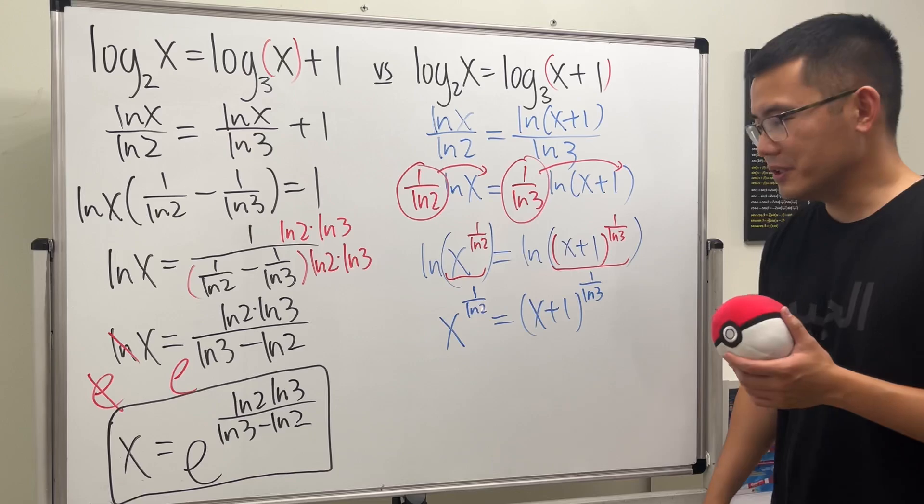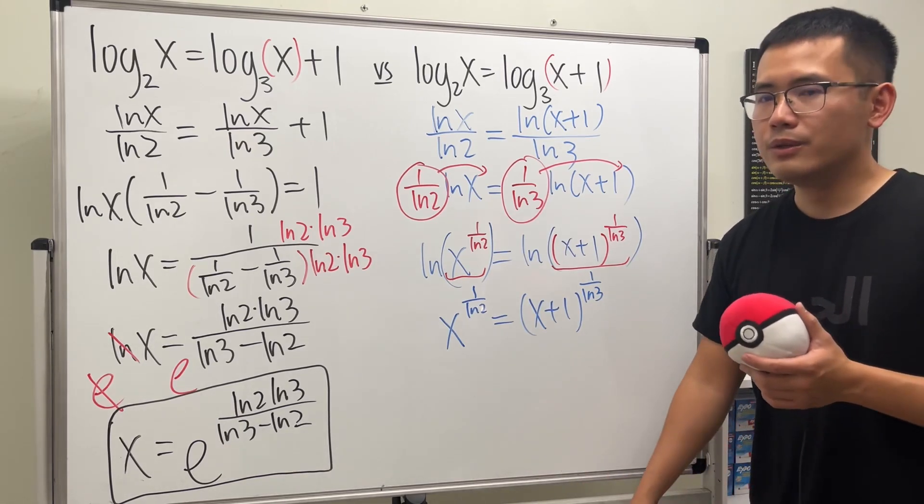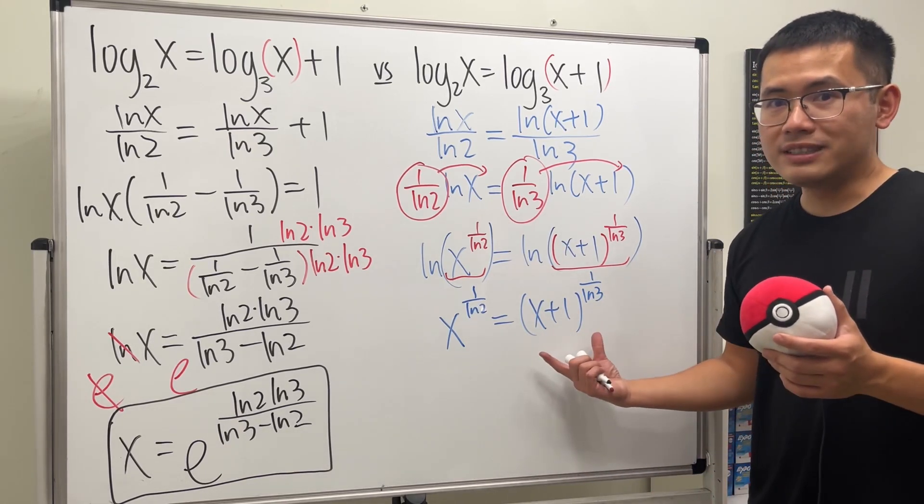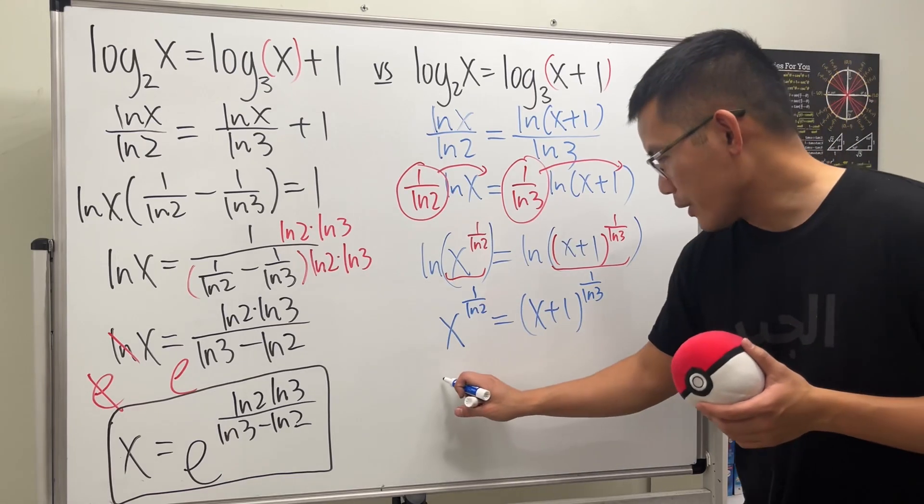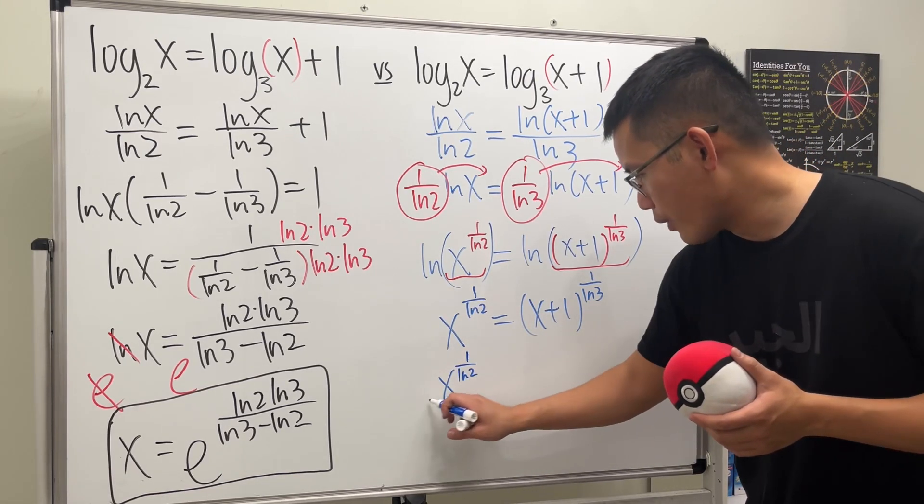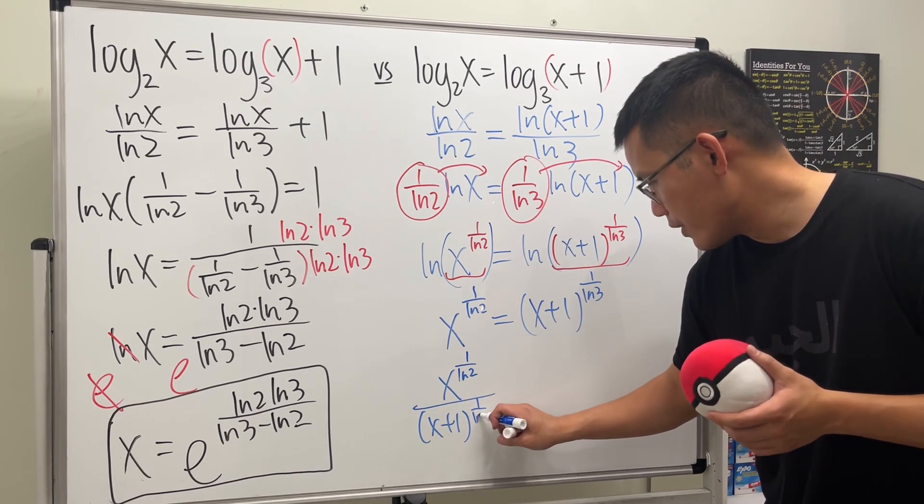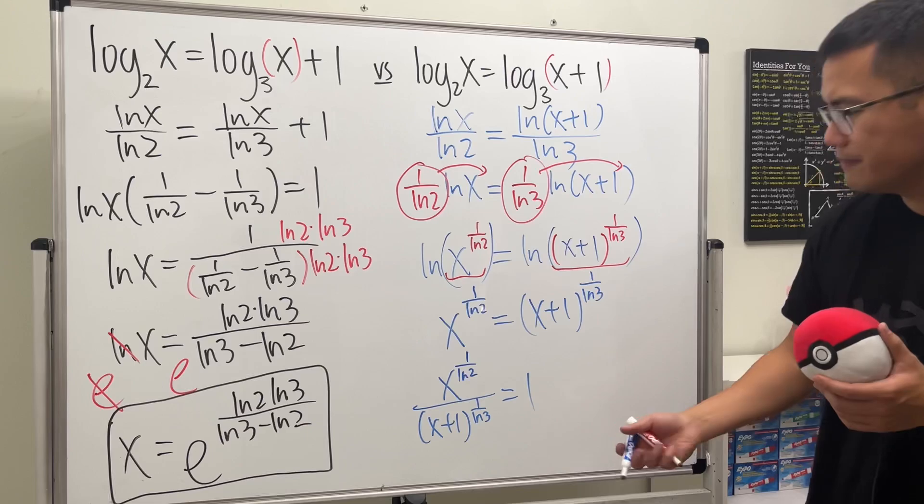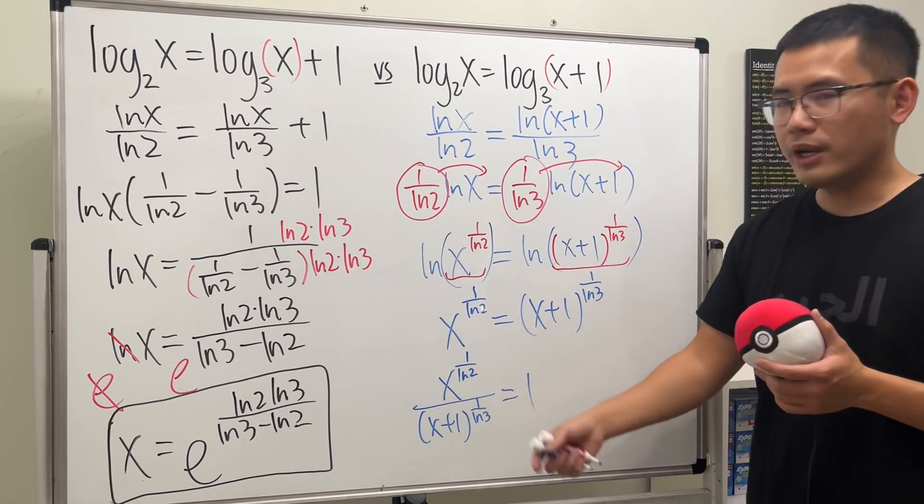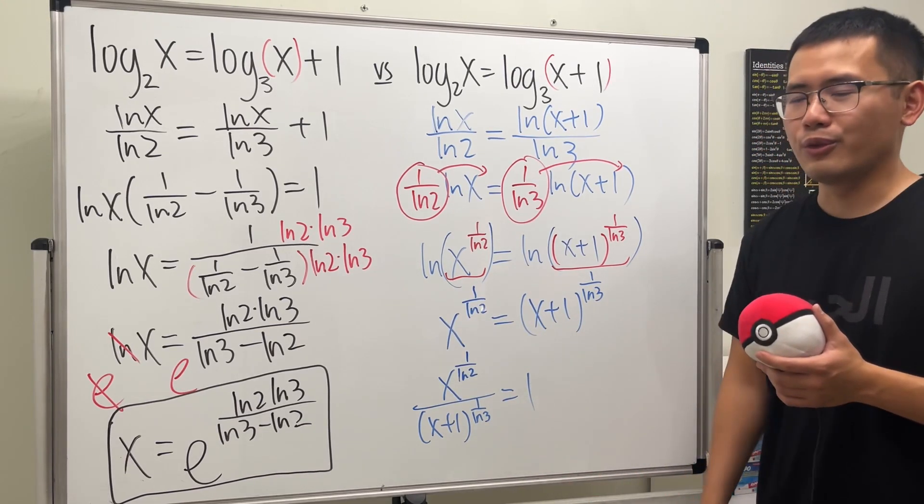So far, so good. Can we expand it? No. You want me to divide this on both sides? Okay, fine. Then we are going to get x to the 1 over ln 2 power over x plus 1 raised to the 1 over ln 3 power, and that's equal to 1? Oh, you want me to subtract instead now, huh? Nah, I'm not going to do it. Lambert W function? No.